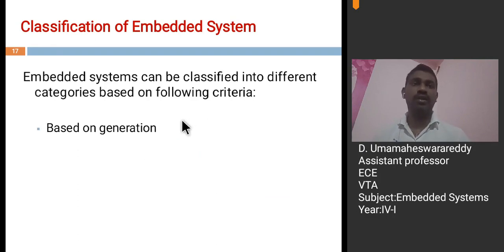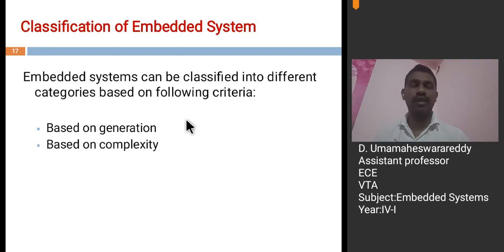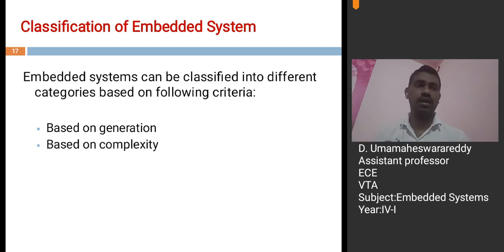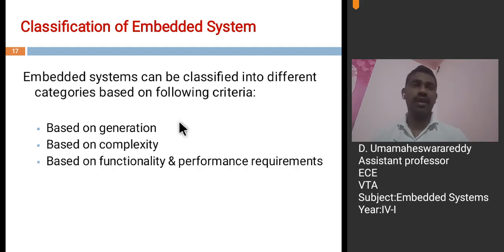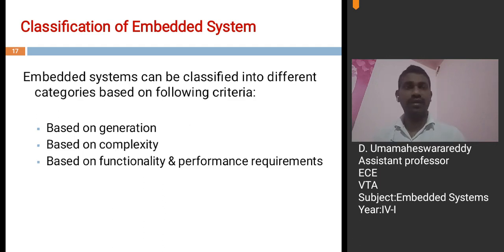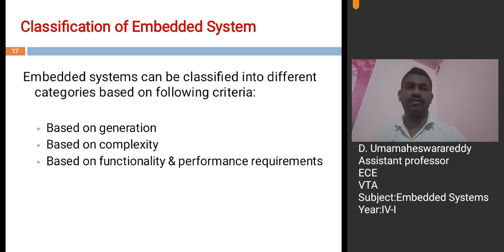First, based on the generation — whether they belong to the first, second, third, or fourth generation. Next, based on the complexity — whether they belong to small scale, medium scale, or large scale. And based on the functionality and performance requirements — whether they are standalone systems, real-time systems, or networked appliances. Like this, we can divide embedded systems based on these criteria.